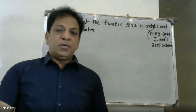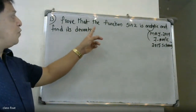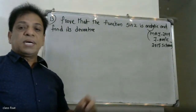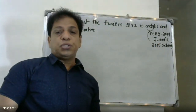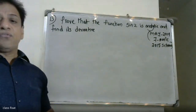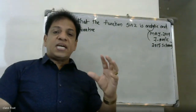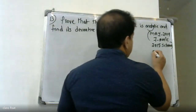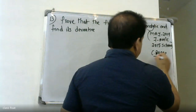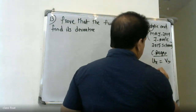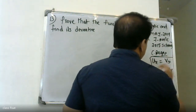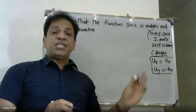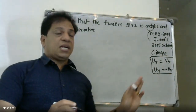Good morning students. We will show that the function sin(z) is analytic and find its derivative. We will use the Cauchy-Riemann equations as our strategy. The Cauchy-Riemann equations are: ux is equal to vy, and uy is equal to minus vx. Using these equations, we can determine if a particular function is analytic.